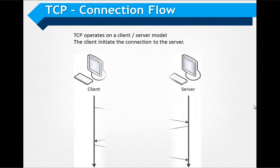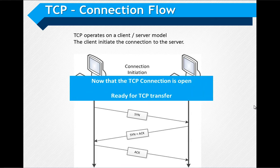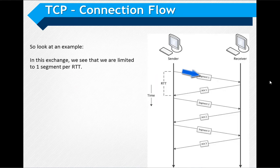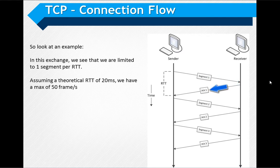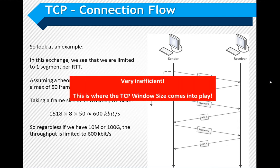Let's look at a TCP communication flow. The client initiates a connection request to the server, and once the connection is open the TCP transfer can start. In this example, the TCP client sends one segment and waits for an acknowledgement. If the round-trip time takes 20 milliseconds, that means 50 frames per second. Considering a 1518-byte frame size, this translates into 600 kilobits per second no matter the pipe size — which is very inefficient.